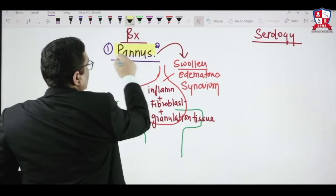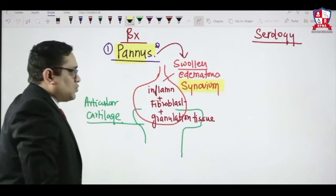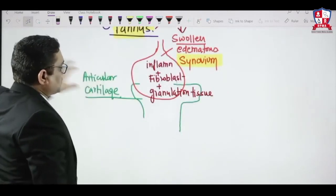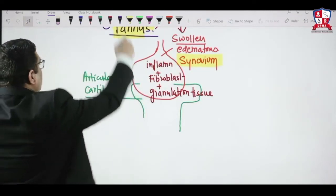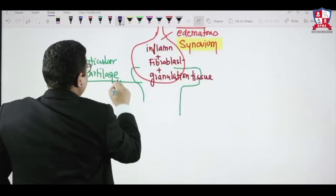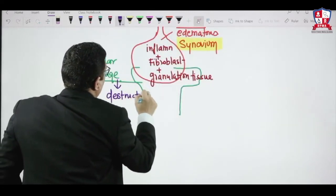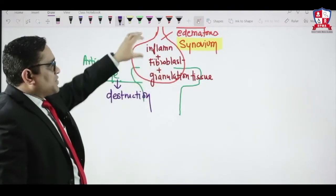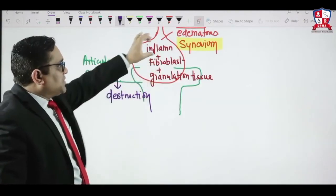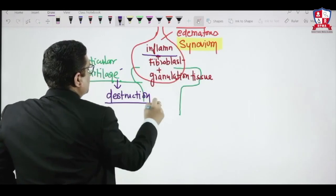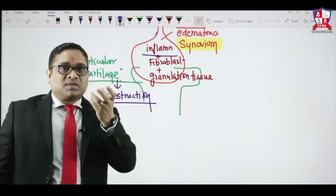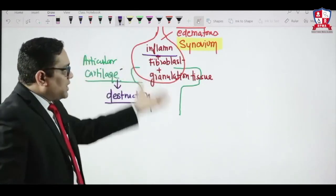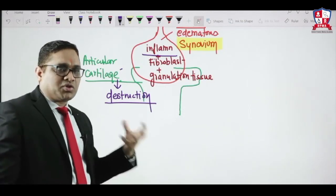The pannus overlies the articular cartilage and causes its erosion and destruction. Because of this, on X-ray you will see erosion of the bone and osteopenia. The swollen edematous synovium with inflammatory cells, fibroblasts, and granulation tissue lies over and destroys the articular cartilage, leading to articular damage and osteopenia.